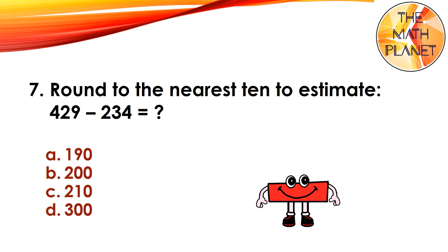Question 7. Round to the nearest ten to estimate 429 minus 234. The correct answer is B because 430 minus 230 equals 200.